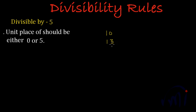So as per this rule, this will not be divisible by 5, right? Let's divide it. 13 divided by 5, 5 into 10. If you subtract, you are going to get 3 as remainder. So 13 is not divisible by 5.